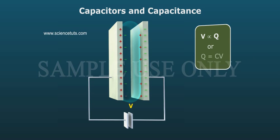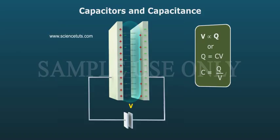Or Q equals CV. C equals Q by V, where constant of proportionality C is called electric capacitance.